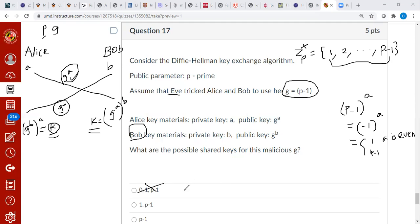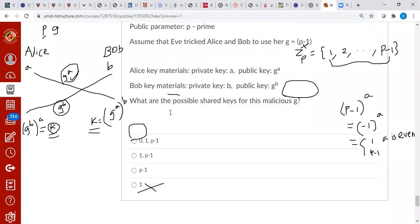So this cannot be the answer. And we can easily now wrap it up. We can see that the correct answer is here. It can be either one or P minus one. That's all. So don't trust a G that comes from arbitrary person, right? If you are using a G somebody gives you, they might have put a backdoor like this, and they know that only two possible values of the key K. They know it can be either one or P minus one. All right, that's all. Thank you very much.